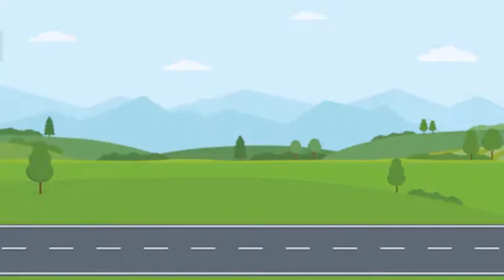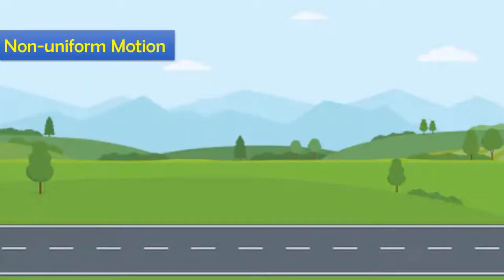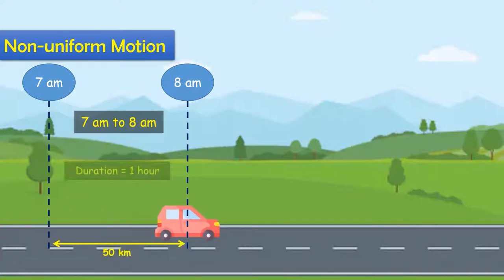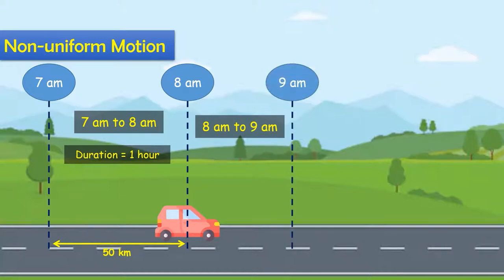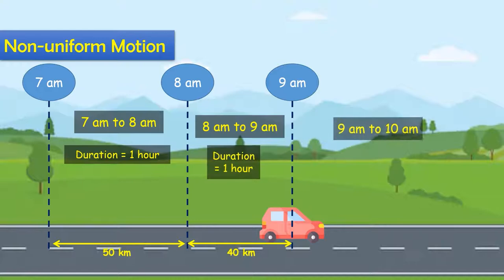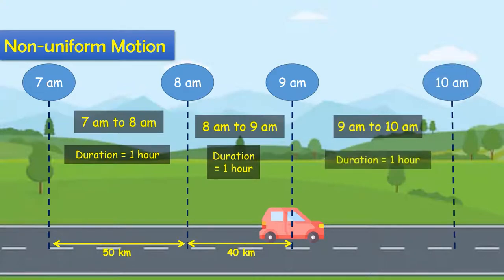Now for non-uniform motion: the body travels different distances in equal time intervals — the distance is 50 km, then 40 km, then 70 km in successive hours.